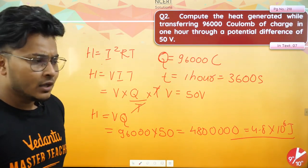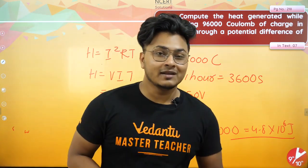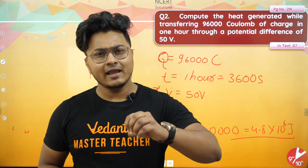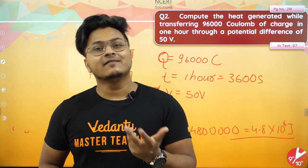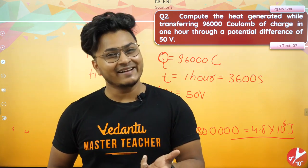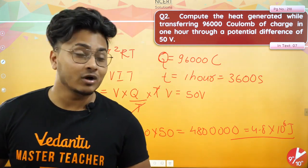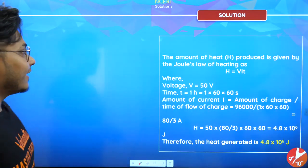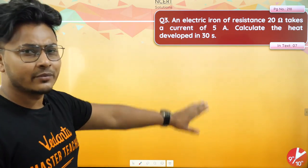It's very easy. Like I always say in regular sessions, we need to clearly know the heat energy formulas — you only need one formula and you can derive the rest. Moving on to the third and final question in the same text box. An electric iron of resistance 20 ohms takes a current of 5 amperes — calculate the heat developed.